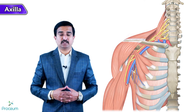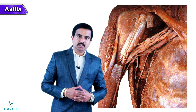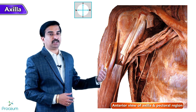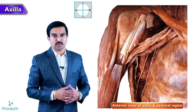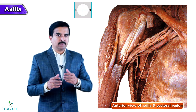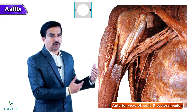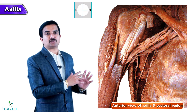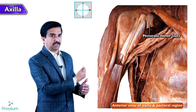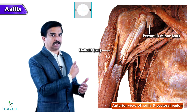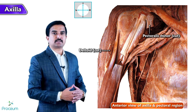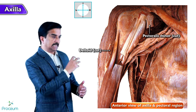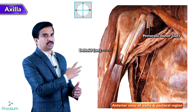Let me start the discussion with this image. This is the anterior view of the axilla and the pectoral region where the pectoralis major and axillary fat are removed. We can observe cut ends of the pectoralis minor as well as the deltoid. These muscles are partially removed to expose the main contents present in the axilla.